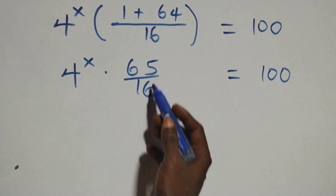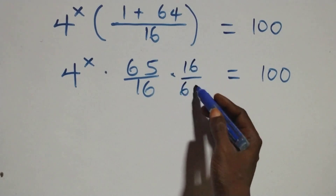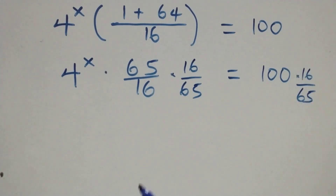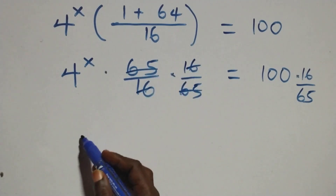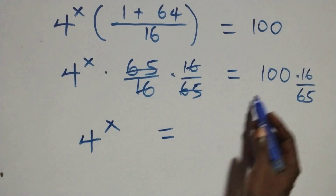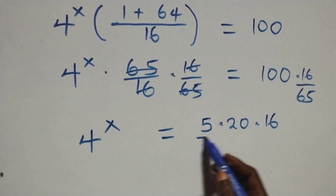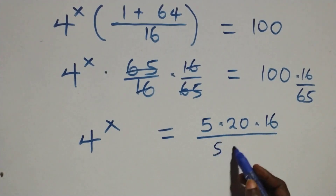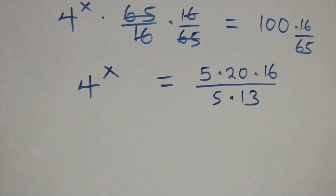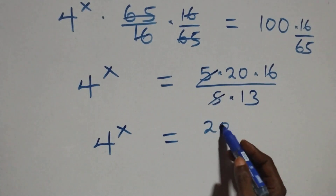Here, to remove this 65 over 16 on this side, multiply both sides by 16 over 65. That is, here this cancels each other, we have 4 raised to power x equals to — we have 100, which we can write as 5 times 20, then times 16 over 65, which we can write as 5 times 13. The 5s cancel each other and we have 4 raised to power x equals to 20 times 16 over 13.